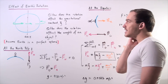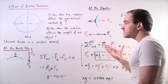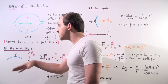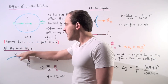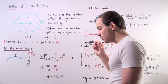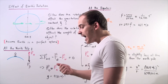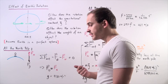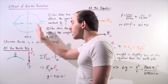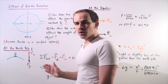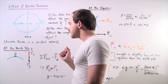Let's suppose we take a person and place them on a scale at the North Pole, as shown here. We want to examine what the gravitational constant is and what the weight of the object is. The object is standing on a scale, and we want to ask what forces are acting on the person along the y-axis.